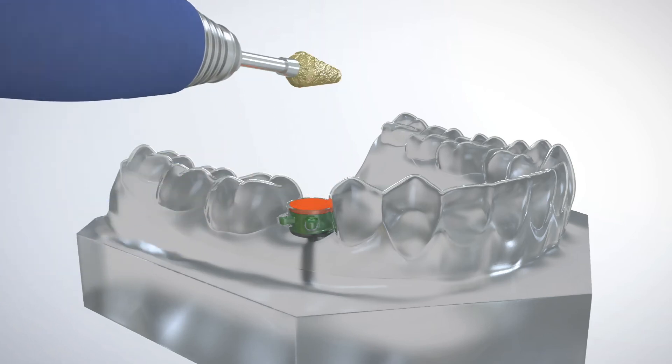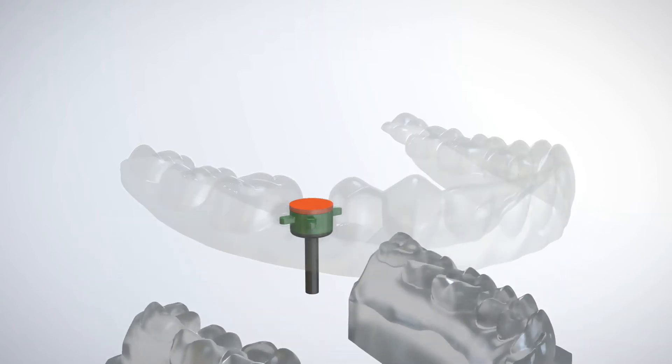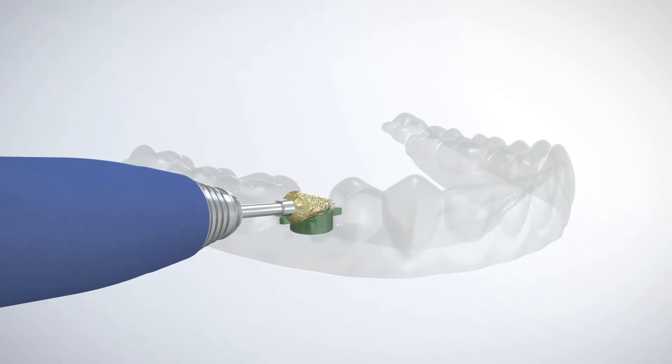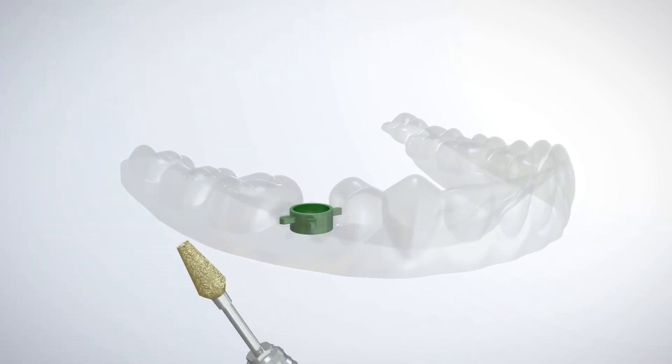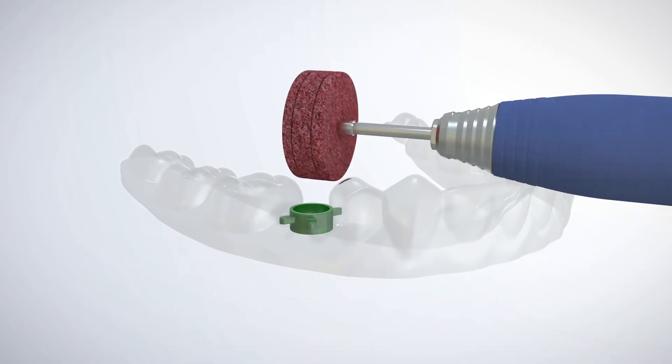The GRS surgical guide is removed from the model, followed by the locator pin and protection cap which is removed with light pressure. The GRS surgical guide is trimmed to accommodate specific surgical requirements, polished, and placed back on the model to confirm fit and stability.